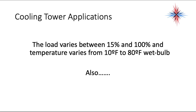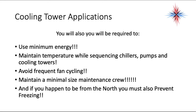When the load varies between 15 and 100 percent, the temperature varies from 10 degrees Fahrenheit to 80 degrees Fahrenheit wet bulb, and you need to use minimum energy. You need to maintain temperatures while sequencing chillers, pumps, and cooling towers. You need to avoid frequent fan cycling — we don't want the fans on the towers coming on and off too much. We need to maintain a minimal size maintenance crew, and if you're in the northern part of the country, you must also prevent freezing of the water.